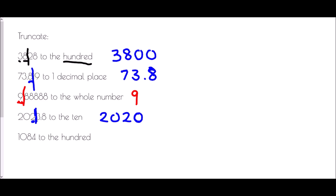Lastly we have 1084 truncated to the hundred. We need to identify where the hundred is. In this number we have 1000 and we have zero hundreds, so it is the zero which is our hundreds digit. We cut off after that point, so we begin with one zero, but then the other digits just become zero, giving us 1000.